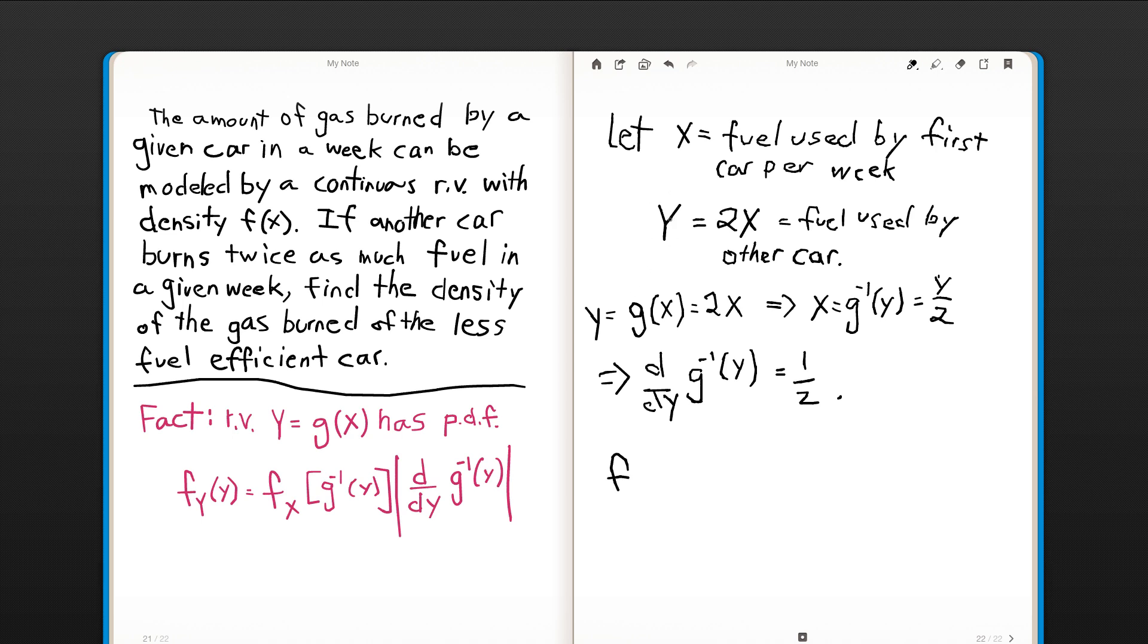Now we put it all together. Our new density, y, which is the density of the fuel used by the other car, which is the less fuel efficient car. And we'll be formal about this and put f_Y(y) there. Y then is going to be equal to—I'm just applying this formula here—f of x, which is our original density, just f, evaluated at g inverse y, which is y over 2, and then times the absolute value of the derivative of g inverse y. That's just a constant, so we don't need absolute value sign. And we're essentially done. It's that quick.